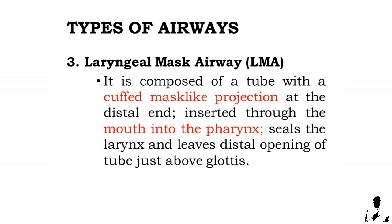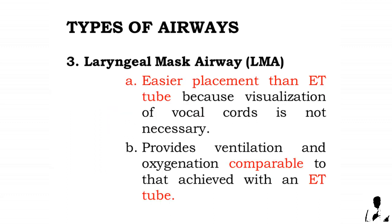Three: the laryngeal mask airway, or LMA. It is composed of a tube with a cuffed, mask-like projection at the distal end, inserted through the mouth into the pharynx. It seals the larynx and leaves the distal opening of the tube just above the glottis. Placement is easier than an ET tube because visualization of the vocal cords is not necessary, and it provides ventilation and oxygenation comparable to that achieved with an ET tube.